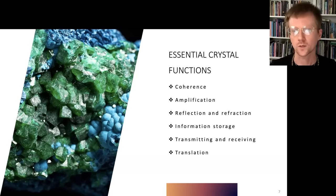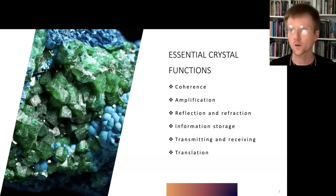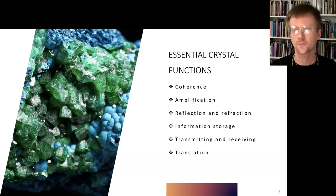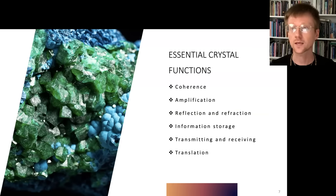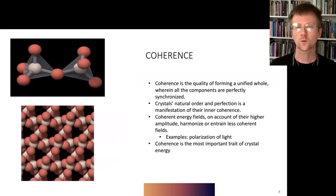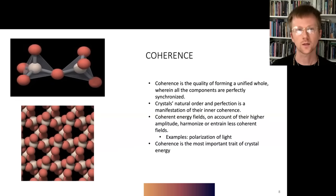Given all that background, we can talk about what the essential functions of any crystal are. We can distill everything crystals do to six points: they cohere or harmonize energy and information; they amplify — a side effect of that coherence; they reflect and refract, seen in their relationships with light; they store energy and information, both symbolically and literally; they transmit and receive like antennas; and they translate or transduce energy or information from one state to another. We'll look at each in sequence, beginning with coherence — and on screen you'll see the fundamental units of quartz forming pyramidal structures called tetrahedra.